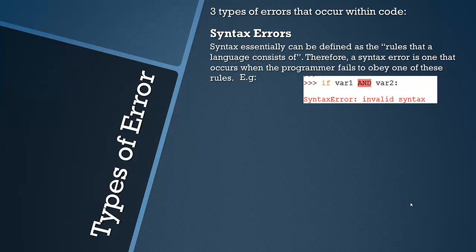Execution is basically the computer running the code. So for example, in Python — fairly simple example — I'm trying to do an if statement here. Instead of using the boolean operator 'and' in lower case I did it in uppercase, and therefore the program doesn't understand what it means and so a syntax error occurs and ceases the program's execution.